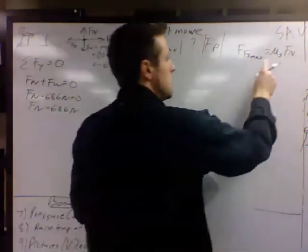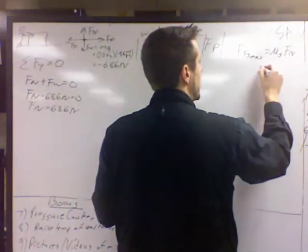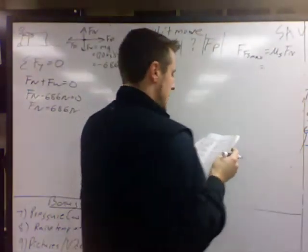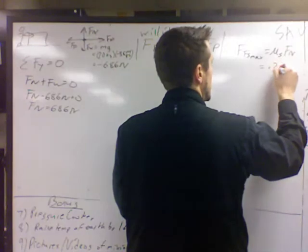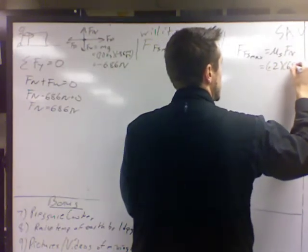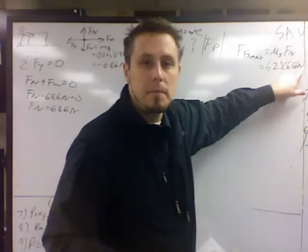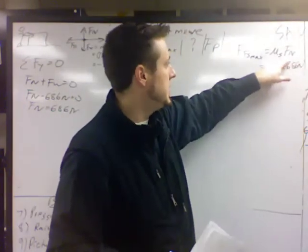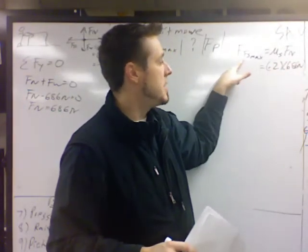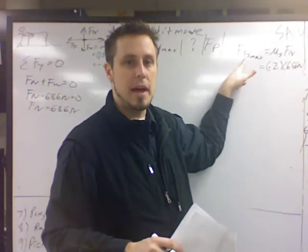So plug in over here. We know mu and we know the normal. Mu was given in the problem as 0.2, 686. And as a reminder, this equation here only gives the magnitude of the static friction max.